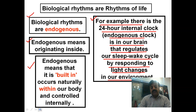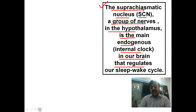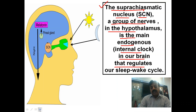That internal clock is the suprachiasmatic nucleus. This is our internal clock. The suprachiasmatic nucleus, in short SCN — a group of neurons located in the hypothalamus — is the main endogenous internal clock in our brain that regulates our sleep and wake cycle. The suprachiasmatic nucleus is located in our hypothalamus.